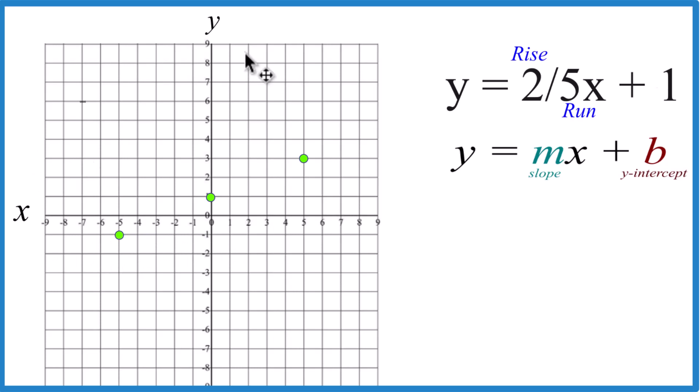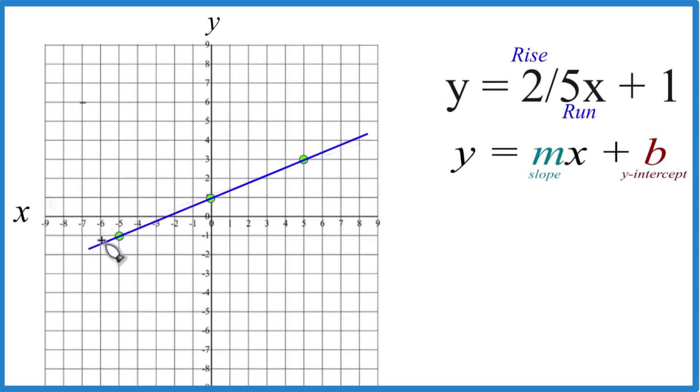That is the equation, or the line I should say, the graph for y equals two-fifths x plus one. Let's put a line through it. Then we could put arrows here, show it goes to infinity, and that's the graph for y equals two-fifths x plus one using slope-intercept form.